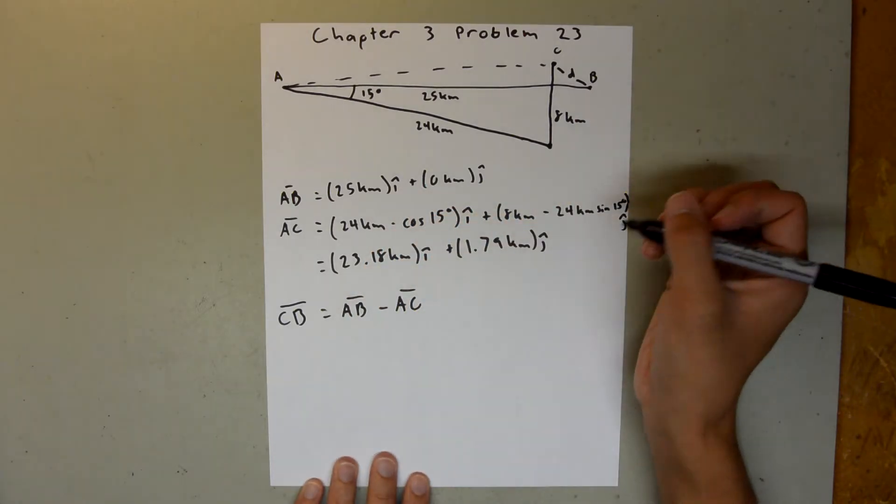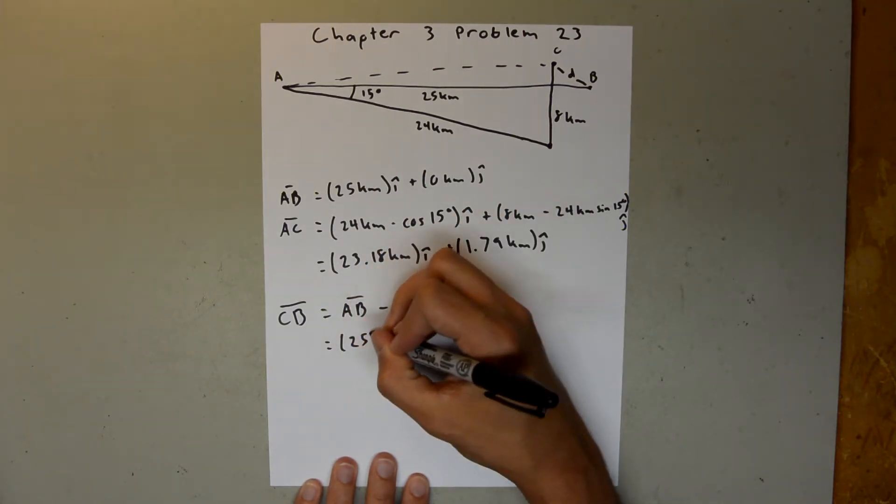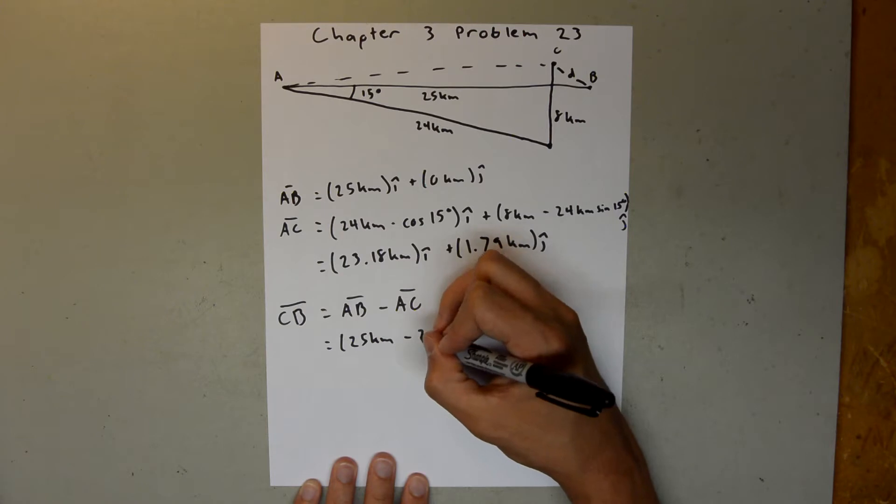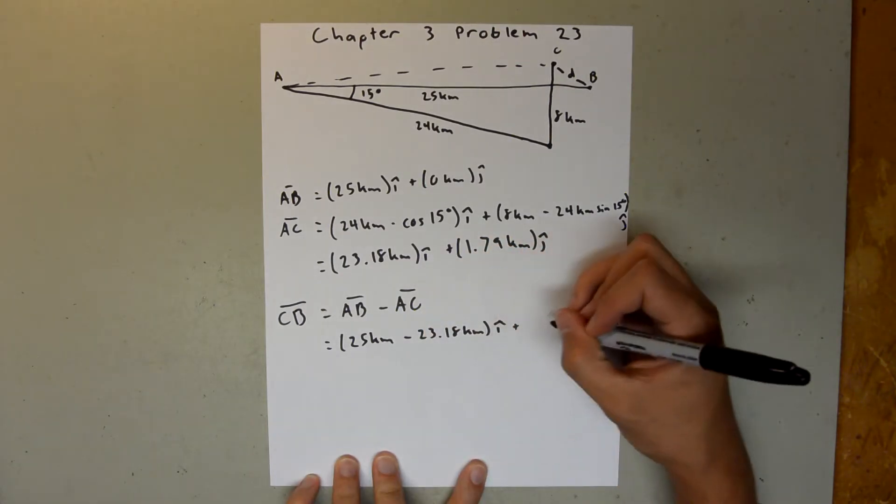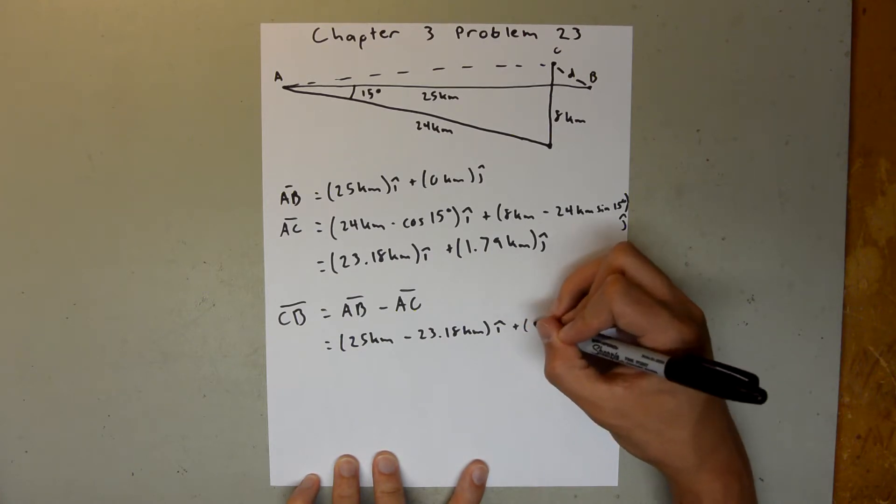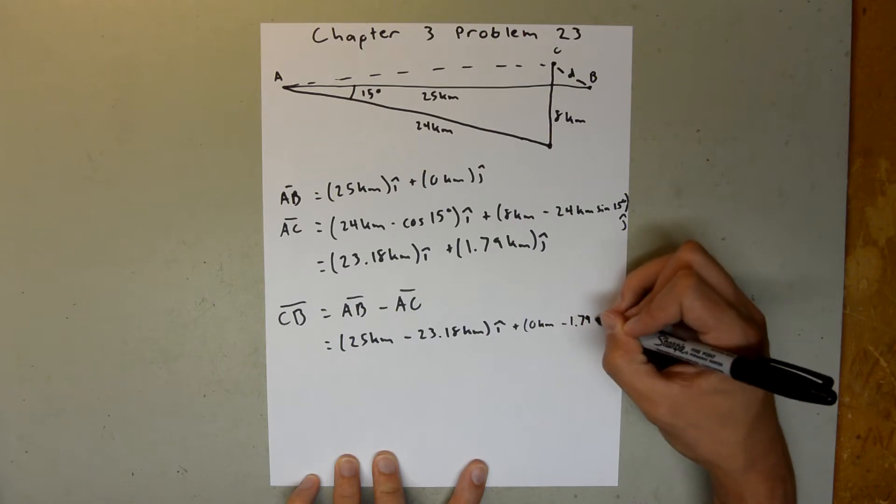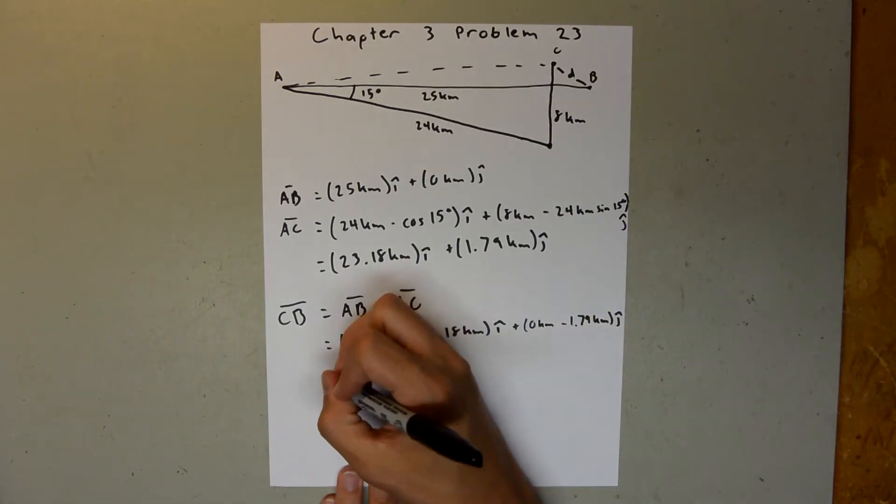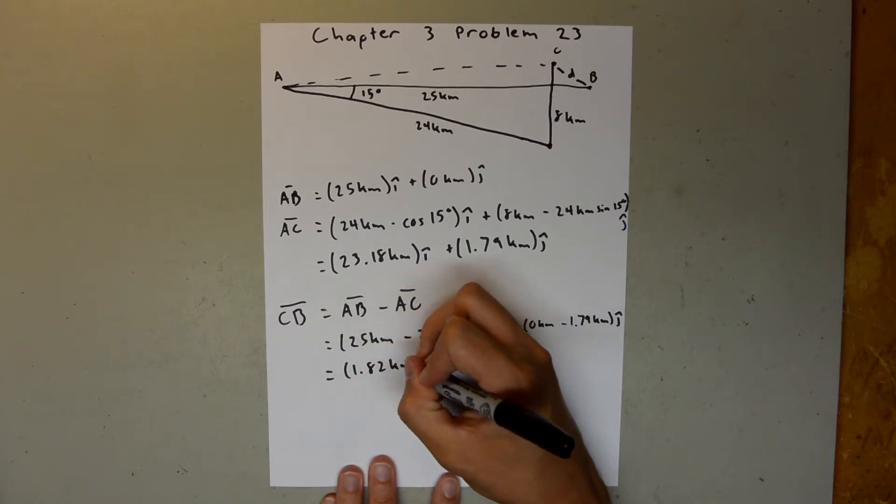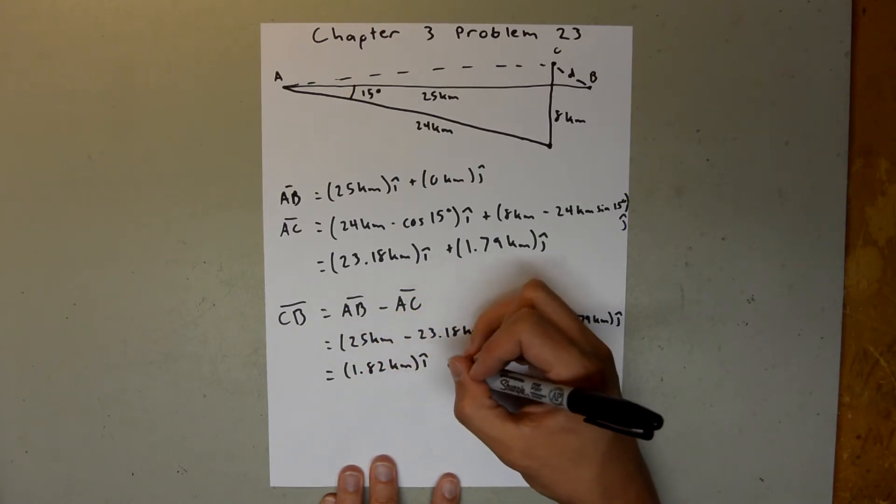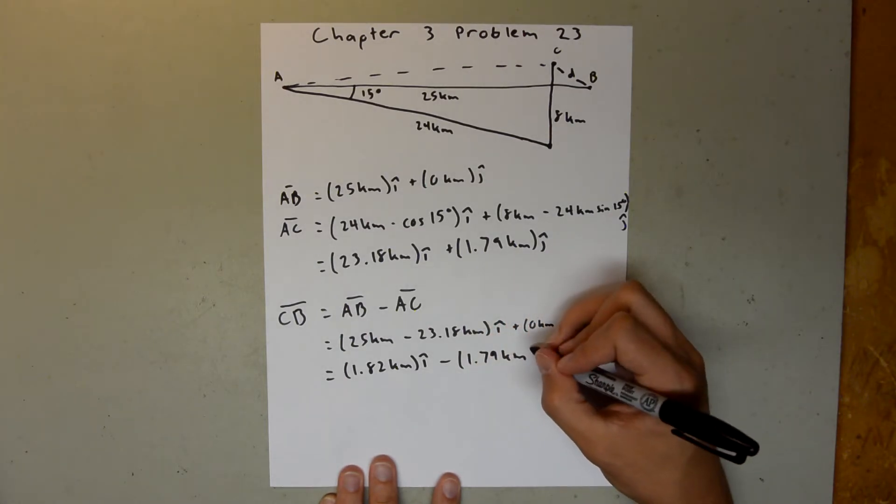And that will be just subtracting the components, so here we have 25 kilometers minus 23.18 kilometers I hat, plus 0 kilometers minus 1.79 kilometers J hat, and if you plug those into your calculator, you should get 1.82 kilometers I hat, minus 1.79 kilometers J hat.